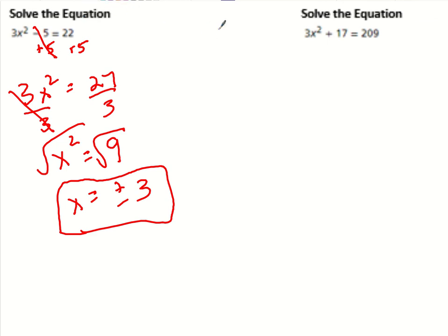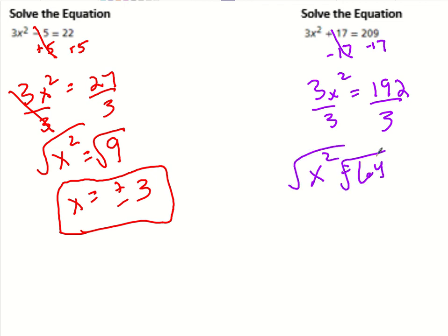So try this last one and see how it goes. So I'm going to subtract 17 on both sides first. I get 3x squared. Let's see, that equals 192 divided by 3. I am going to use a calculator for 64. So when I take the square root, I get 8. And that's positive or negative 8.